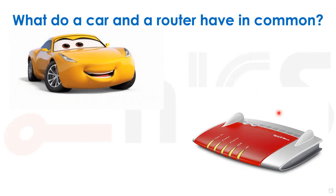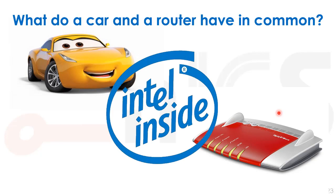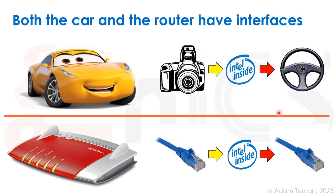What do a car and a router have in common? They both have a CPU inside. In a car, especially a smart or autonomous car, sensors collect information, send it to computation units for signal processing and decision-making, and then actuators like the steering wheel act on those decisions. A router works the same way — it receives data through cables, processes it, decides what to do, and sends it back out.